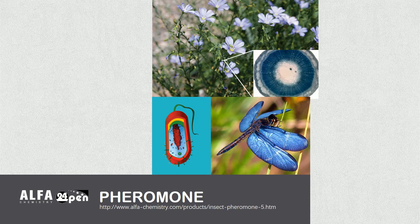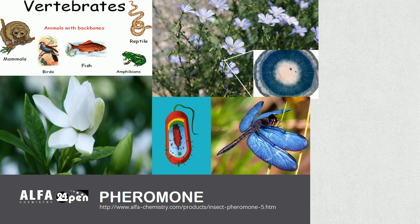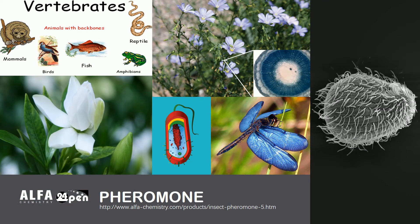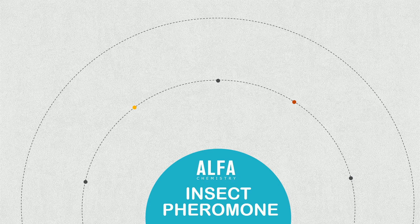In addition, some vertebrates, plants and ciliates communicate by using pheromones. In order to engage in routine activities, each species of insects relies on more than 100 chemicals during its life.